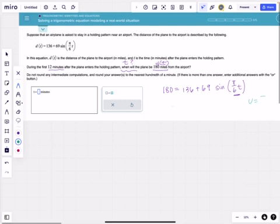So let's let u equal pi over 6 t, and let's solve for u. So let's see, we'll say 180 is equal to 136 plus 69 times the sine of u.